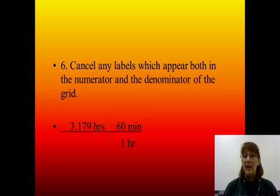Then, you're going to cancel any labels that appear in both the top and the bottom, the numerator and the denominator of the grid. So, hours is on top, hours is on bottom. We can cancel those out. And look, if you look there, the only unit of measurement we have left is minutes, which is what they wanted us to get the answer in.